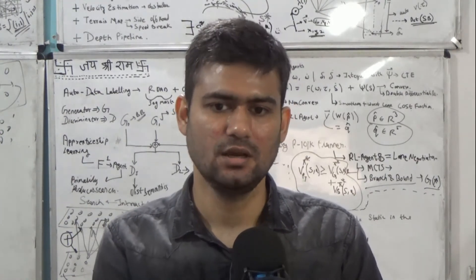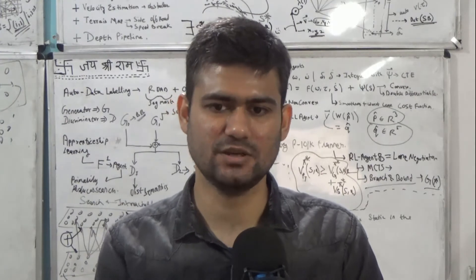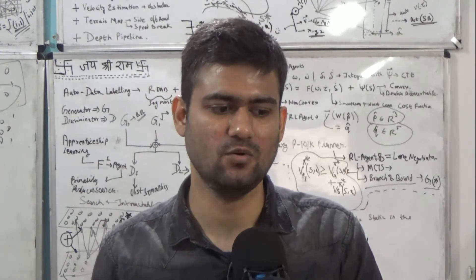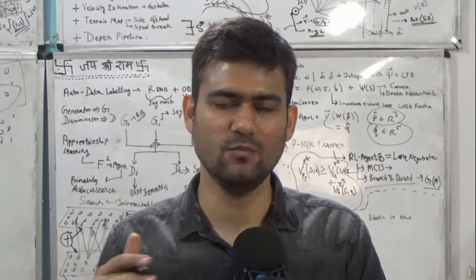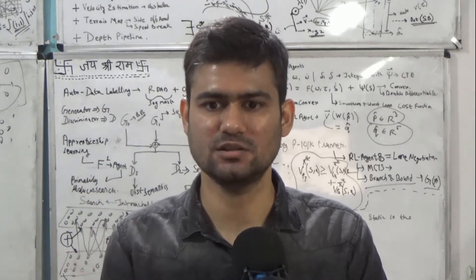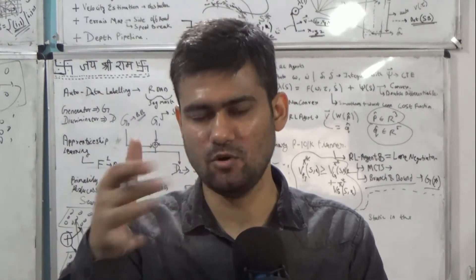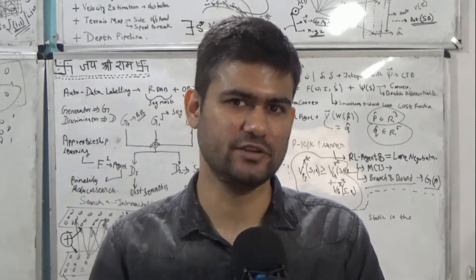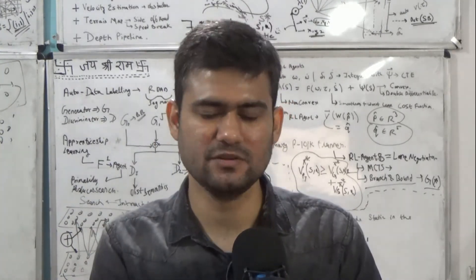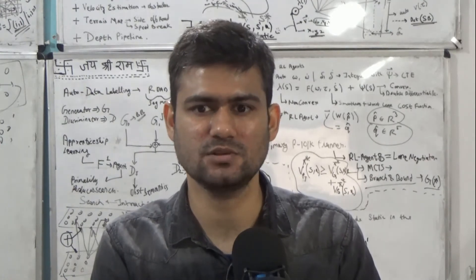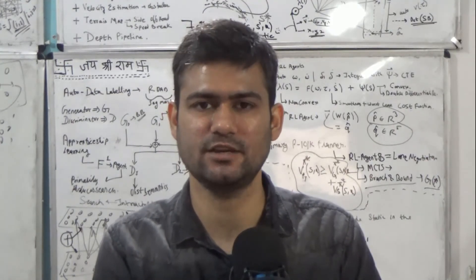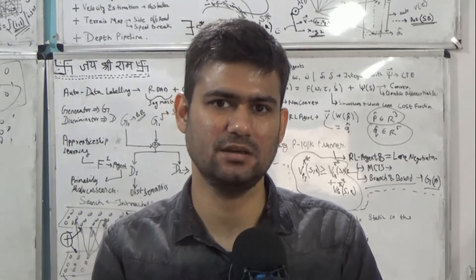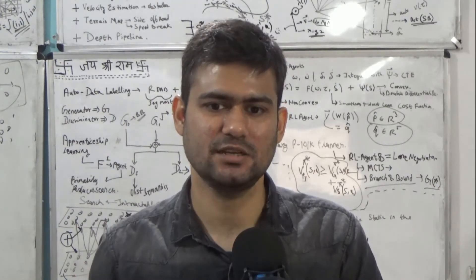One thing to note is that when the bilateral filter is applied iteratively over an image, it will create images that are almost piecewise constant — most regions will become homogeneous, and ultimately the image will start looking like a cartoonish image. In the previous lecture we understood all the mathematical terminologies and equations used in the bilateral filter.